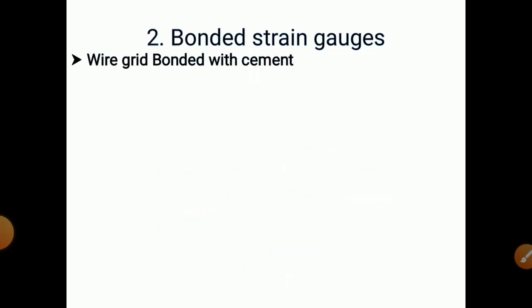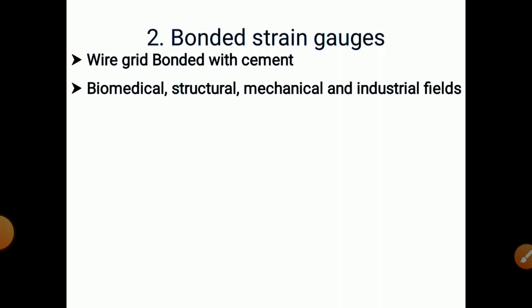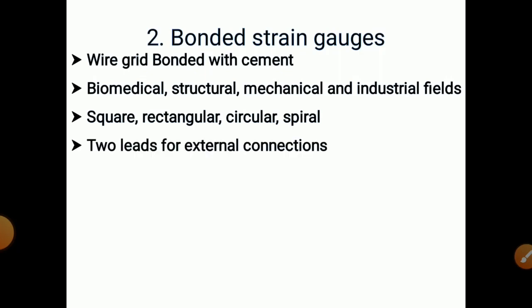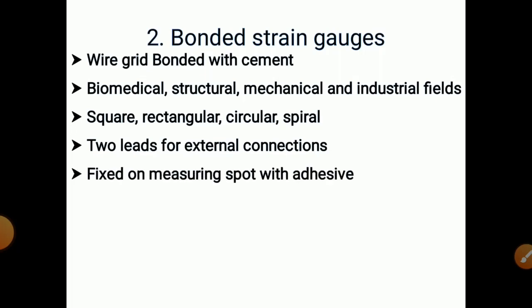The bonded type of strain gauge is where the wire grid is bonded with cement. Its applications include biomedical, structural, mechanical, and industrial fields. These gauges are available in square, rectangular, circular, and spiral shapes. Two leads are required for external connections, and the gauge is fixed on the measuring spot with adhesive. For example, if we want to measure displacement of any rod in a UTM machine, we will fix the strain gauge on that measuring spot with adhesive.